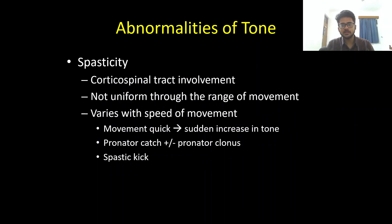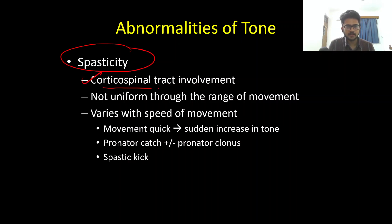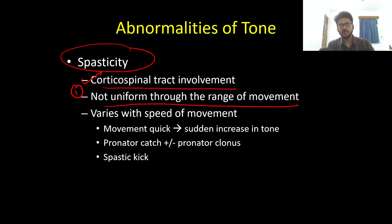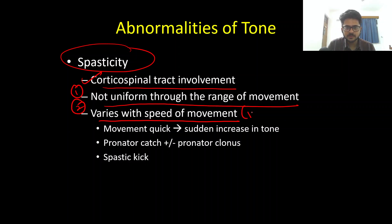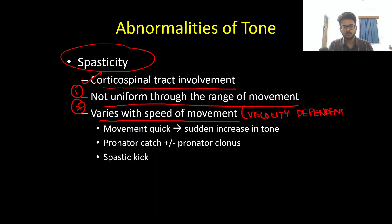Spasticity is because of pyramidal or corticospinal tract involvement. Contrary to rigidity: number one, spasticity is not uniformly appreciated throughout the range of movement — opposite to rigidity which is uniform. Number two, very importantly, spasticity varies with the speed of movement — it is velocity dependent. If you suddenly increase the velocity of your movements while checking a joint, there will be a sudden increase in tone. Spasticity is brought out by rapid movements.